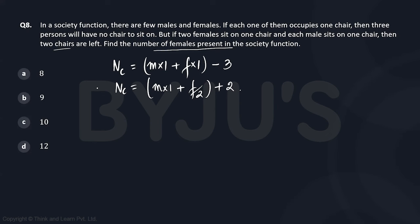can be solved because if we subtract, one variable goes away. So we are left with f minus 3 equals f by 2 plus 2, or f by 2 will be equal to 3 plus 2, which